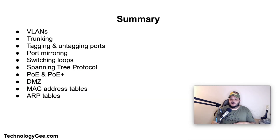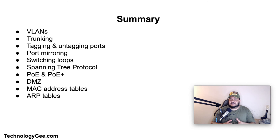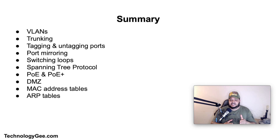That's my quick class on network segmentation where we talked about VLANs, trunking, tagging and untagging ports, port mirroring, switching loops, spanning tree protocol, power over ethernet and power over ethernet plus, DMZs, MAC address tables, and ARP tables. If you got something valuable out of this, hit the like button, share, drop a comment, and most importantly subscribe. Also check out my website Technology G to get up to date on the latest to help you successfully pass the CompTIA Network+ N10-007 certification.